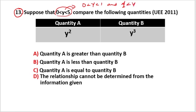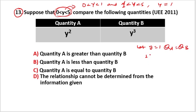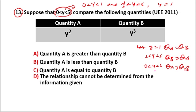Check: y equals 1. Quantity A equals quantity B. Check: 1 is less than y less than 5. Quantity B equals quantity A. Check: 0 less than y less than 1. For example, 1 over 2 squared equals 1 over 4, and 1 over 2 cubed equals 1 over 8.